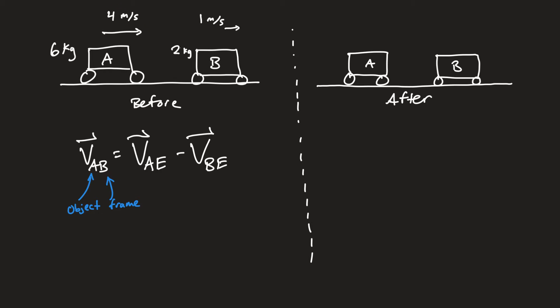Four meters per second is how fast A is going as seen by somebody in the earth's frame of reference — somebody sitting on the surface watching the cars travel to the right. To find the velocity of A as measured by someone in B's frame, you subtract off the velocity of B in the earth's frame. So v_A(B) = v_A(earth) minus v_B(earth). That tells you how fast A seems to be moving as measured by somebody in B's frame. The main pattern is: both terms on the right are in the earth frame, and you subtract.